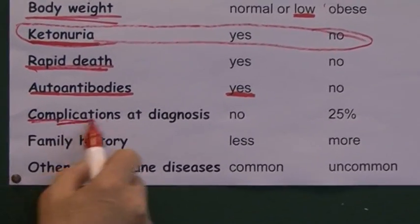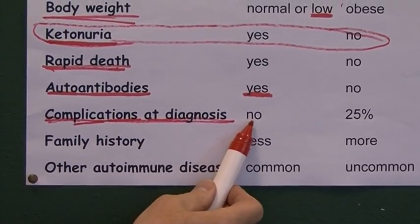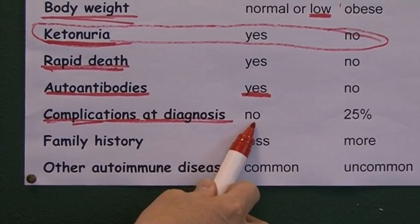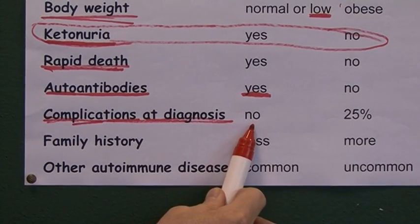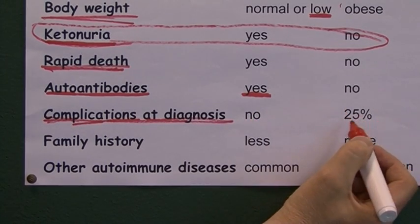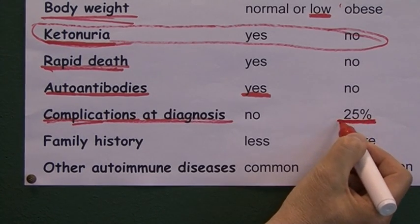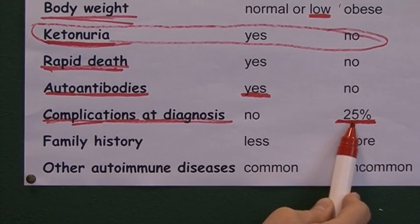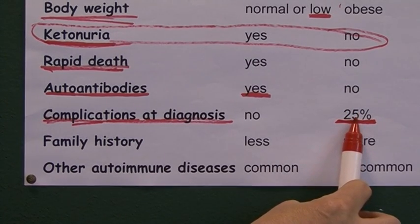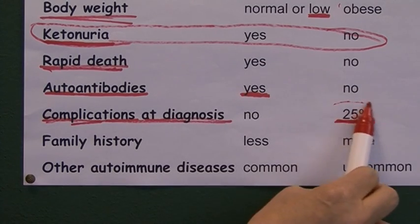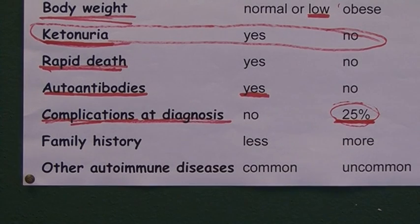Regarding complications at diagnosis: in type 1, the patient has only been in the diabetic blood sugar range for a few weeks, which is not long enough to develop long-term complications. In type 2, however, because patients have often been diabetic for months or years without realizing it, up to 25 percent of patients presenting with type 2 diabetes can already have some long-term complications. The earlier we diagnose and treat type 2, the fewer complications we'll see at diagnosis.